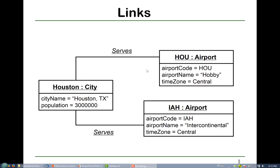We draw a line between two objects to represent a link, and we give a name for each link, like 'serves', and we draw a line below each link name.